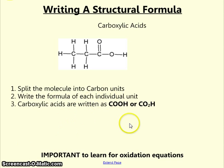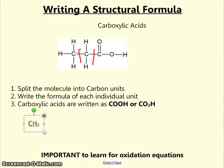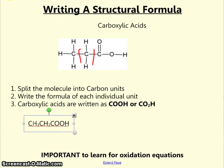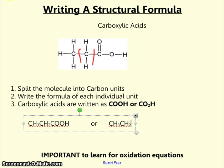Carboxylic acids — again, very important for oxidation equations of alcohols. Splitting the molecule into individual carbon units, the formula for propanoic acid becomes CH3, CH2, and the final carbon unit has one carbon, two oxygens, and a hydrogen. The formula could also be written as CH3, CH2, CO2H. It does not matter which way you write it — just choose a way and stick to it.